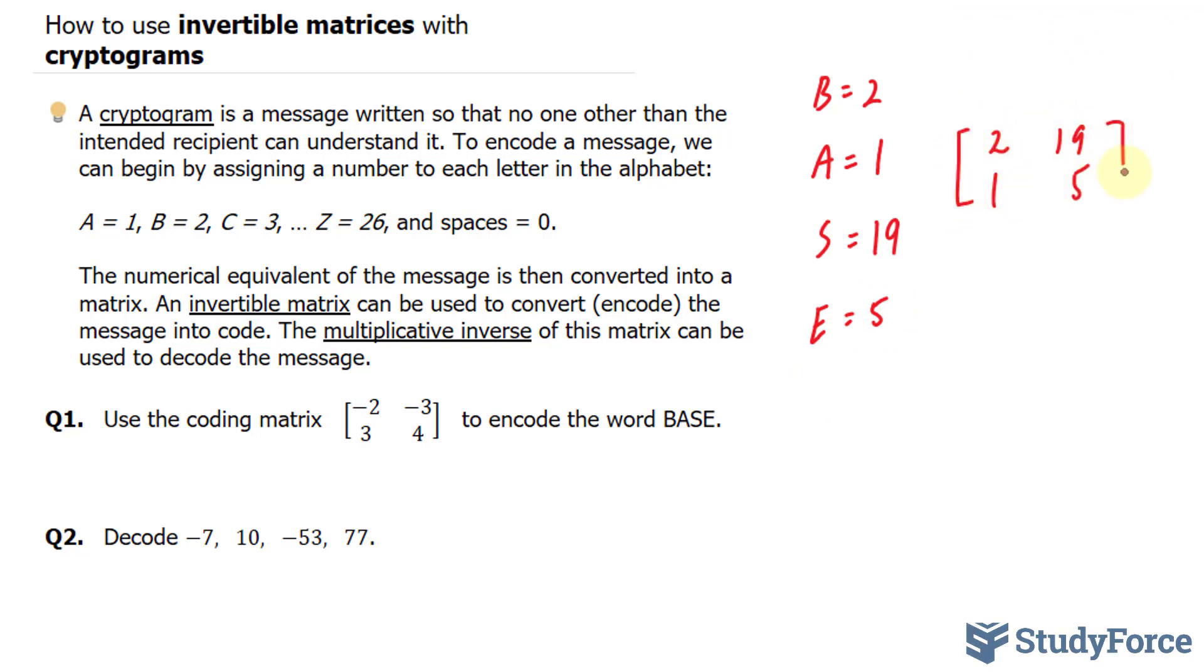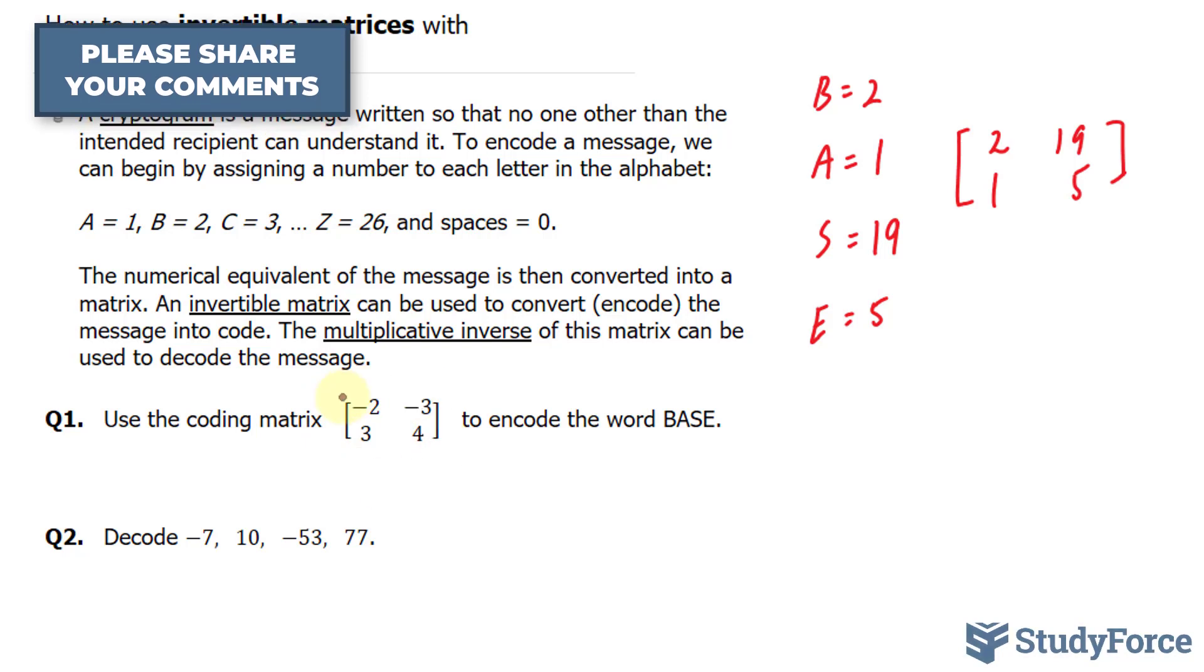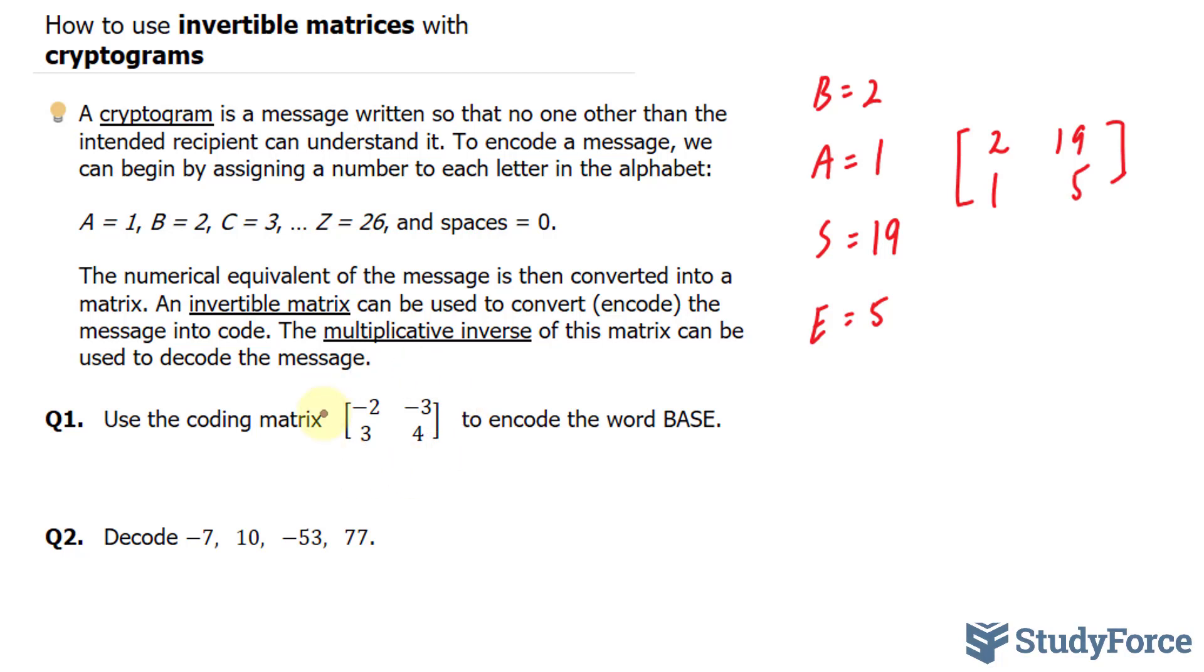And notice the order in which I did this: B, A, S, E. Now, they want us to use this coding matrix to encode the word BASE. So I'll take this matrix and multiply it to the one that you see here, where we have -2, 3, -3, and 4.